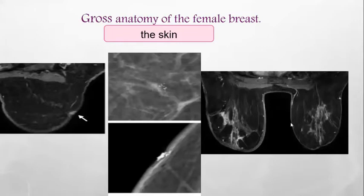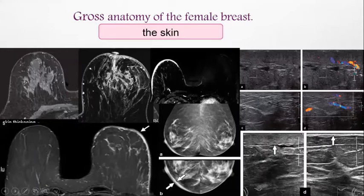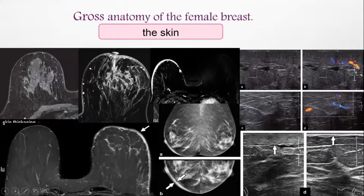A dermal inclusion cyst on mammography and ultrasound appears as a circumscribed lesion with a claw sign — typical of a dermal lesion. Cancer, however, can infiltrate the skin with absence of the claw sign, seen as a lesion extending from the mammary zone into the subcutaneous tissue and skin. Focal skin thickening is pathological. Dystrophic calcifications in the skin are usually benign from fat necrosis, as in mammoplasty scarring. In examples comparing normal versus thickened skin, the thickened skin is clearly pathological compared to the thin normal contralateral skin.